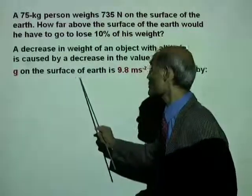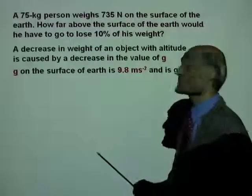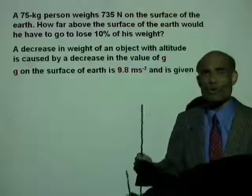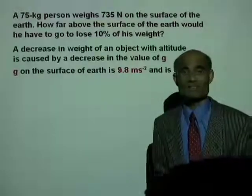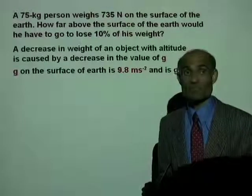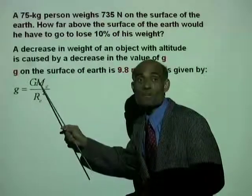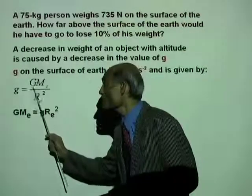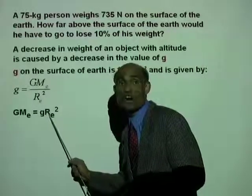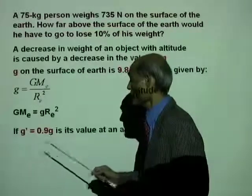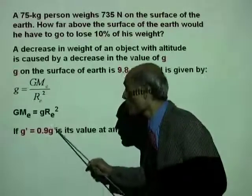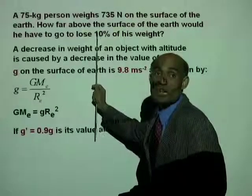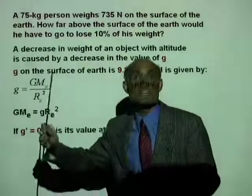g on the surface of the Earth is 9.8 m/s² and is given by the equation g = GM_E / R_E². We can replace GM_E by gR_E². If g' equals 0.9g, in other words, we need to find the altitude at which the person will lose 10 percent of his weight.